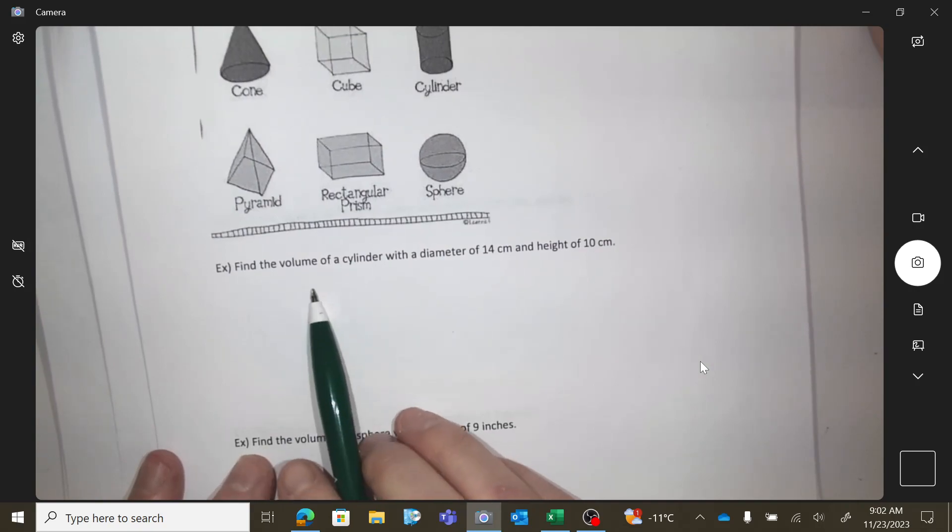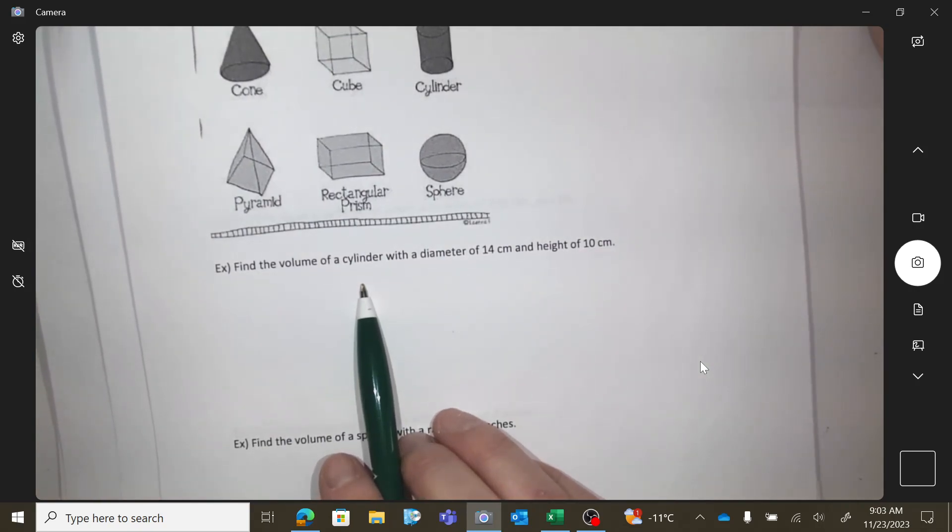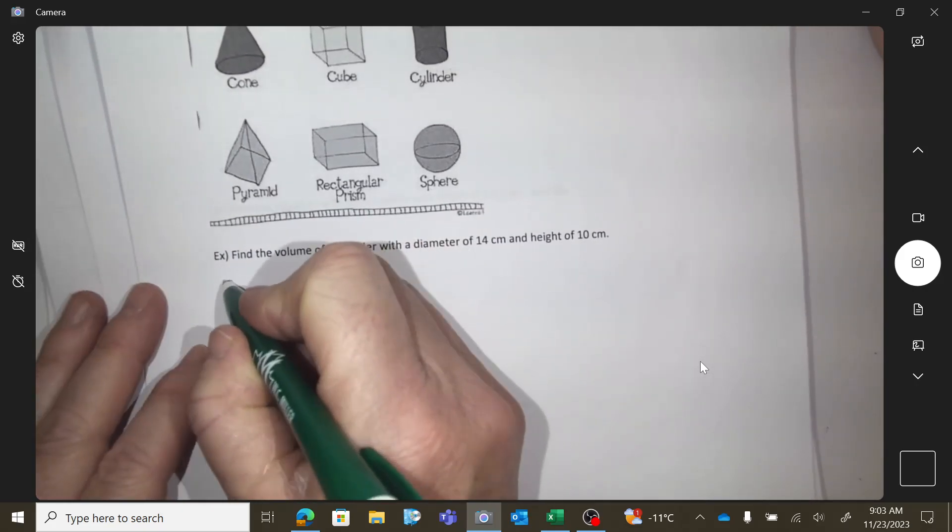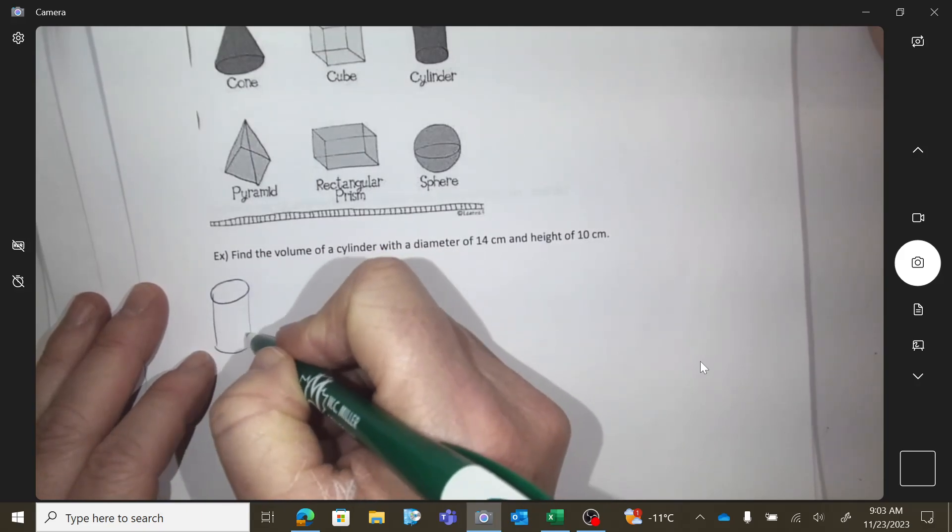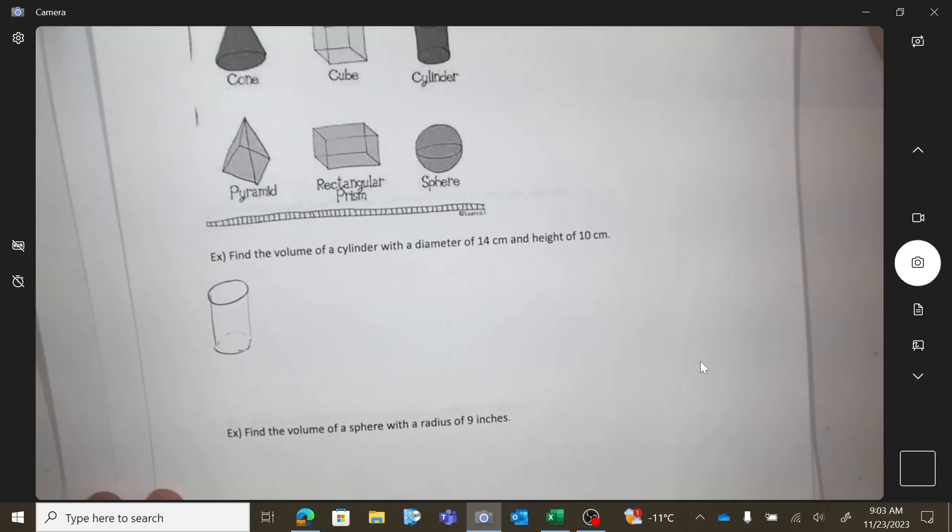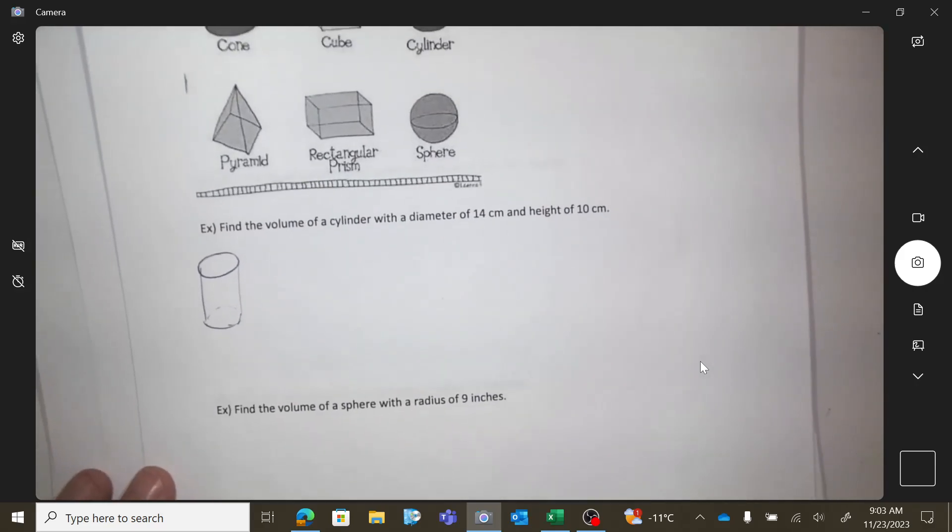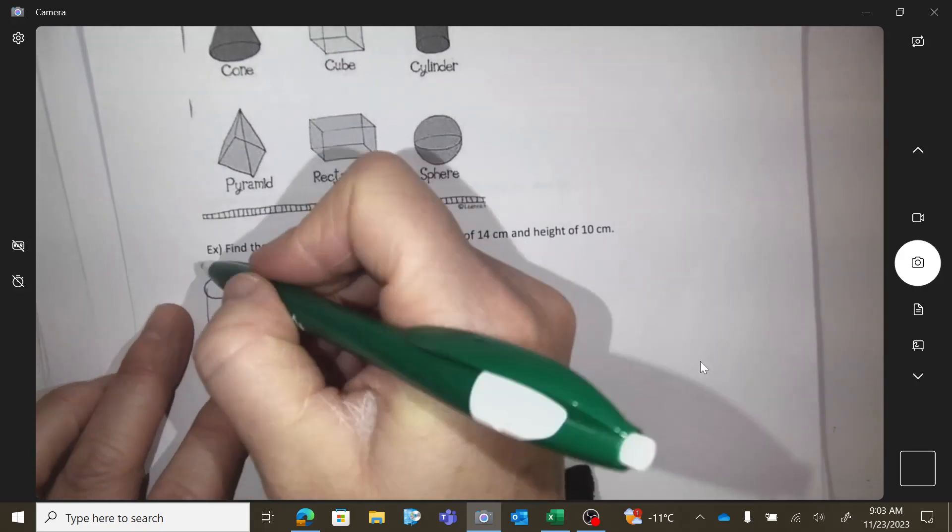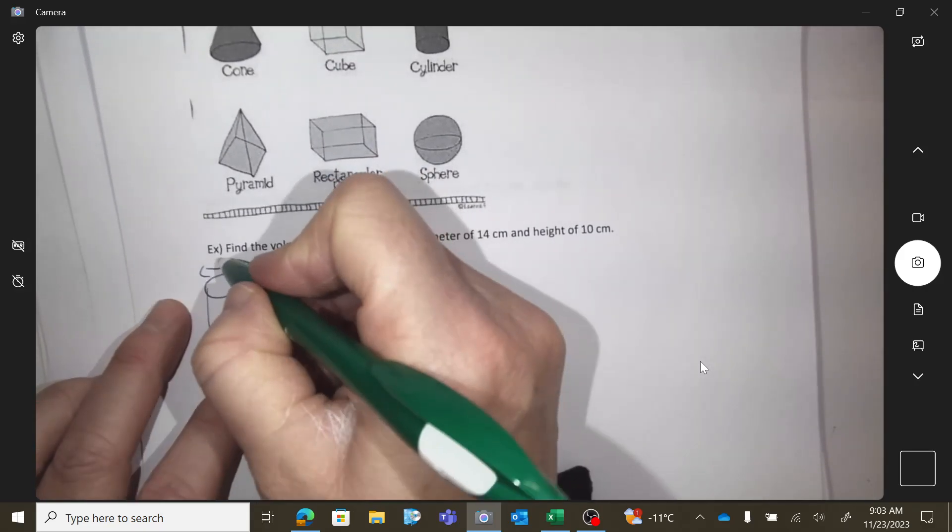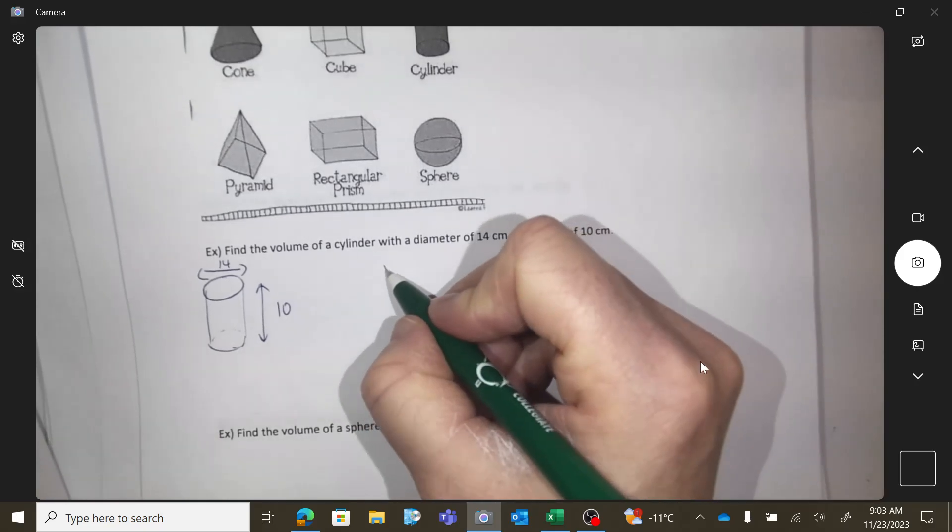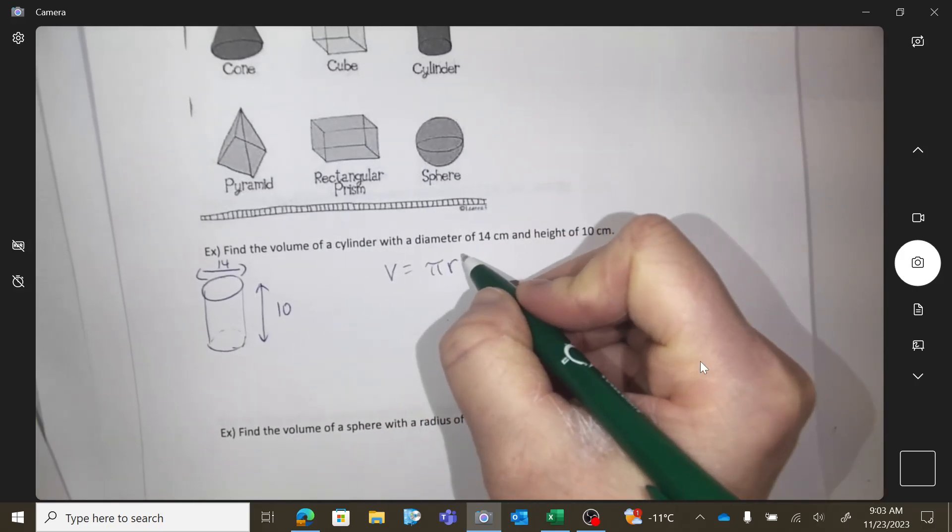Okay, so find the volume of a cylinder that has a diameter of 14 and a height of 10. So you can find the shape. You don't need to draw this, but this is the shape that you're looking for. A cylinder, we know the height is 10, and we know the diameter is 14. So formula sheet, can you copy this down?